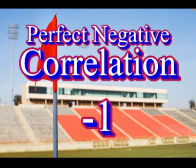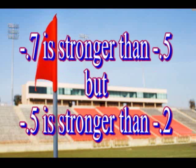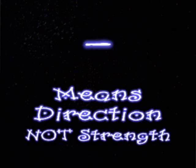Negative correlations will be reported as a number between 0 and negative 1. A score of 0 means no correlation at all. A score of negative 1 is a perfect correlation, which really does not happen. As correlations get closer to negative 1, they are getting stronger. A correlation of negative 0.8 is stronger than negative 0.5, but negative 0.5 is stronger than negative 0.2. Remember, the negative sign indicates the direction, not strength. When judging the strength of a correlation, just look at the number and ignore the sign.